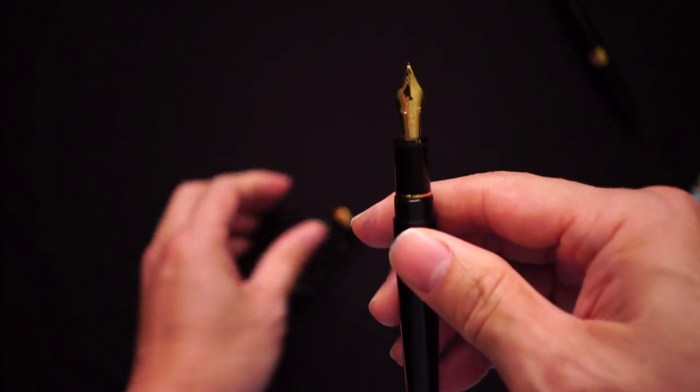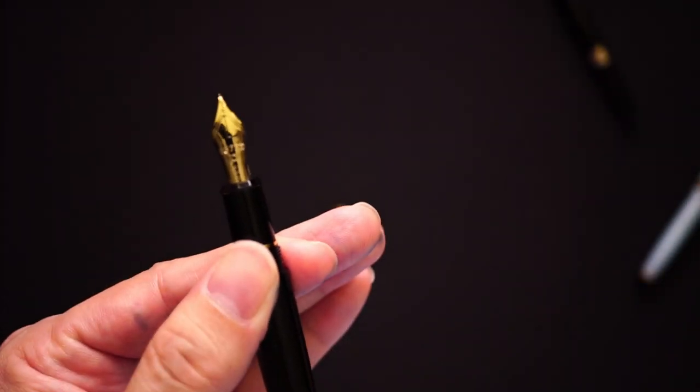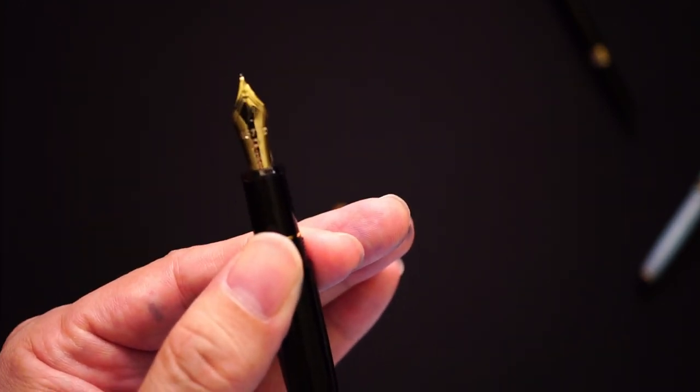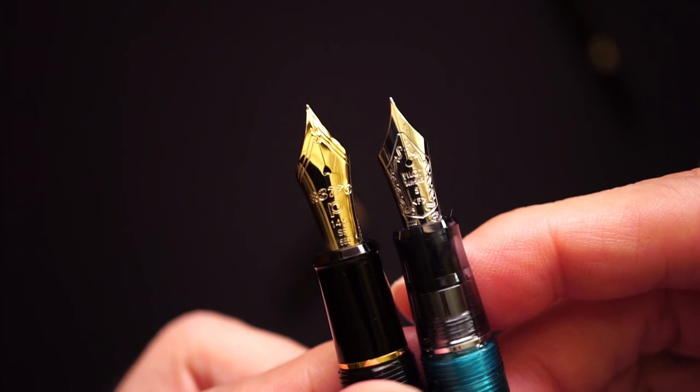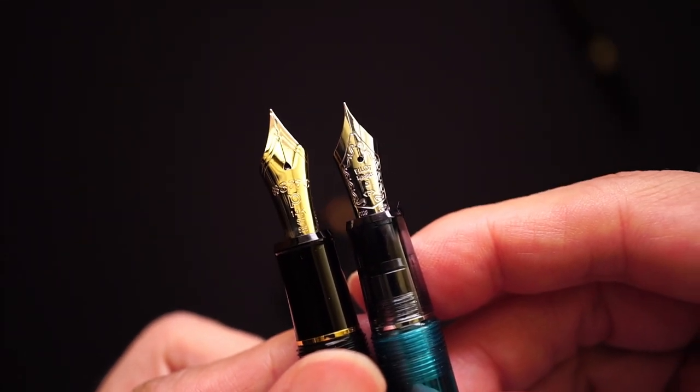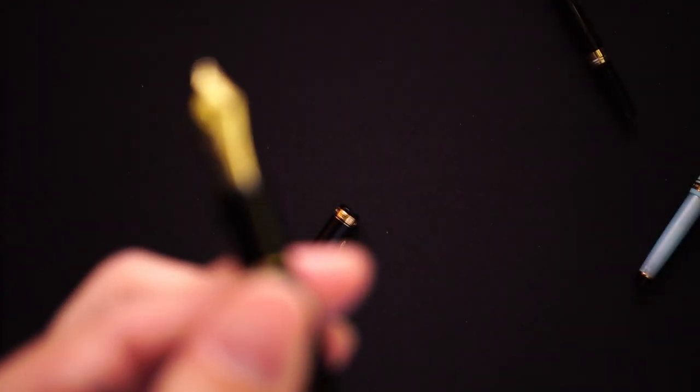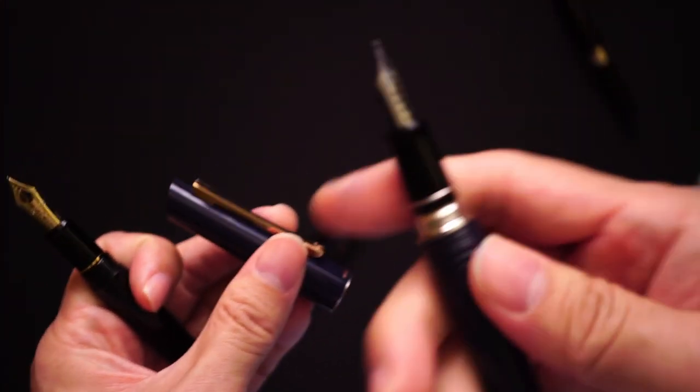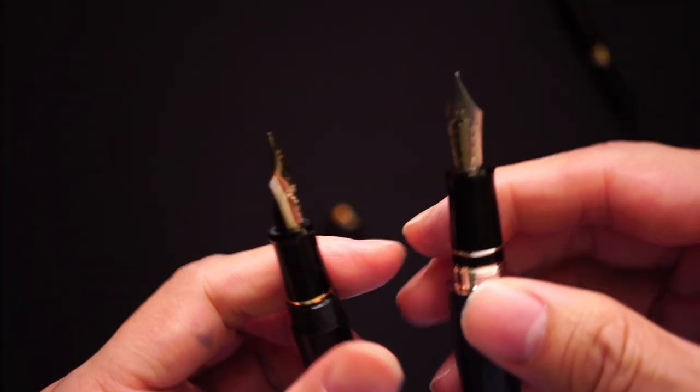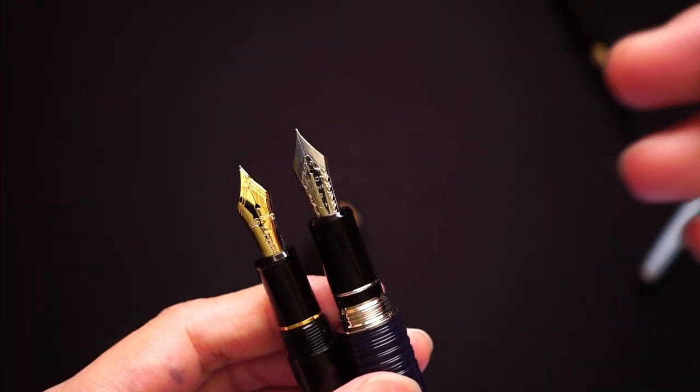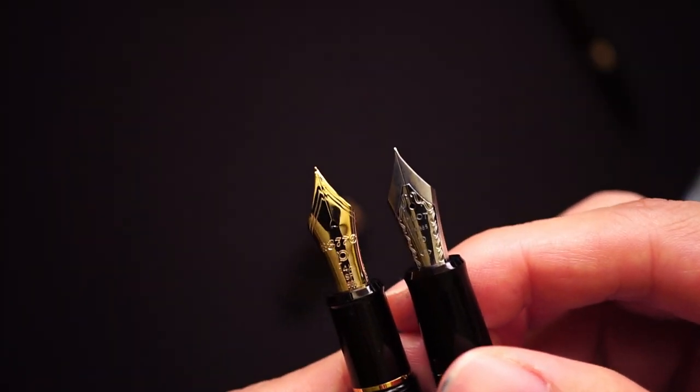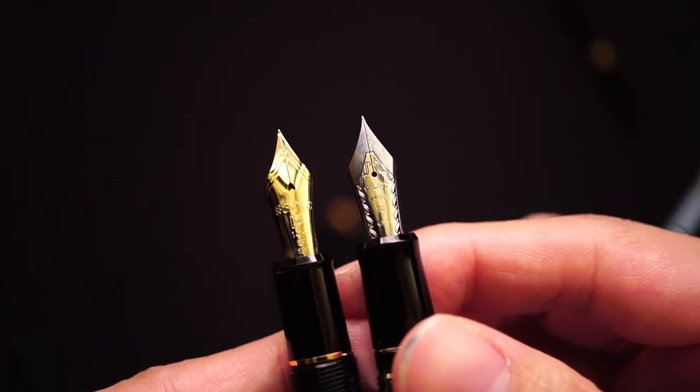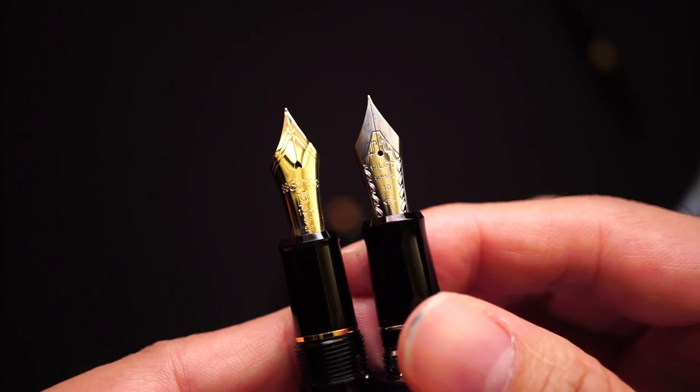The reason why I say that the 3776 is a different class of pen is because of the size of the nib. If you look at the size of the nib and compare this with the Custom 74, you'll notice that the nib is one size bigger. In fact, if you look at the 3776 nib compared to a number 10 Pilot nib, they're roughly the same size.